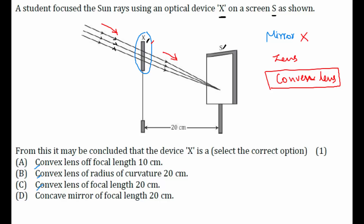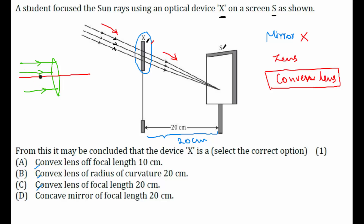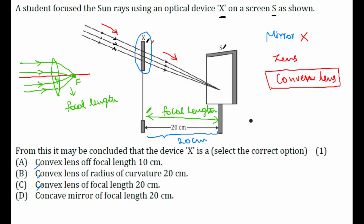Now we need to find the focal length. The distance between the lens and the screen is 20 cm. When rays parallel to the principal axis fall on a convex lens, they converge at a single point called the focus. The distance between the pole and the focus is the focal length — so the focal length is 20 cm.